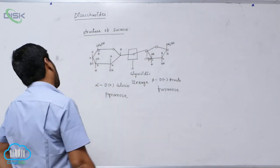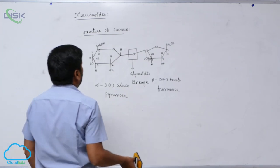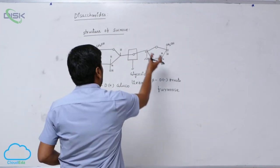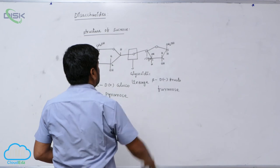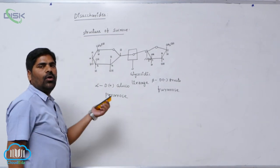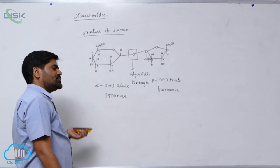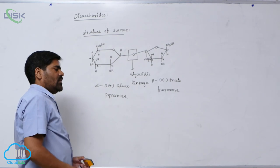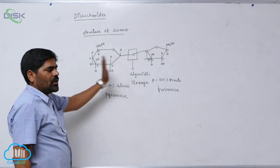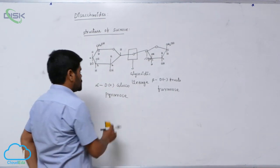So, this is the structure of sucrose molecule. Here no free hemiacetal linkage. In this molecule no free hemiacetal linkage. So, that is the reason why it is a non-reducing sugar, non-reducing sugar.